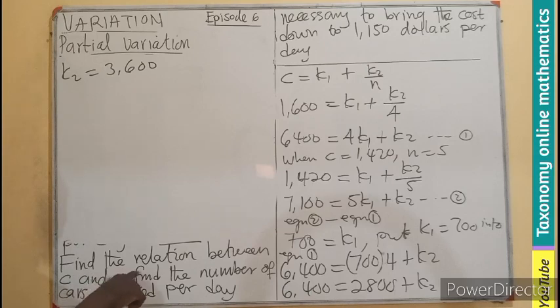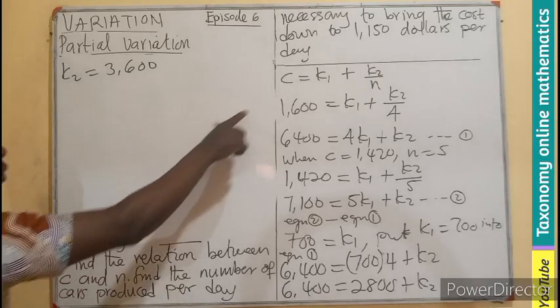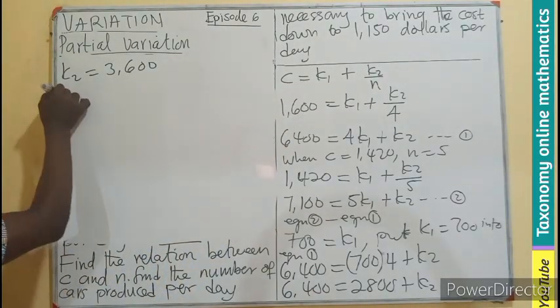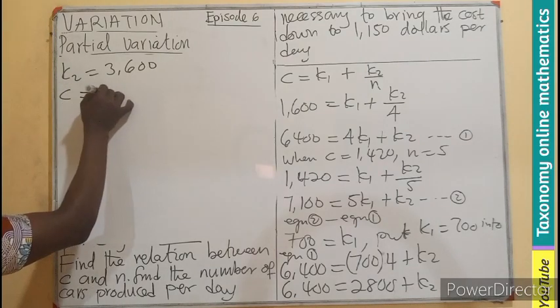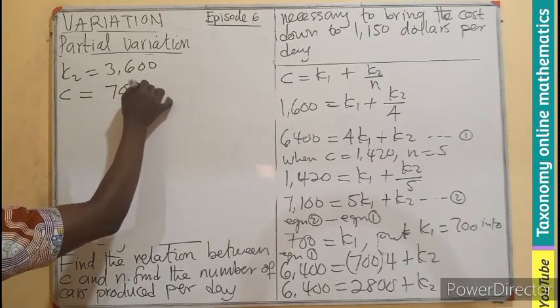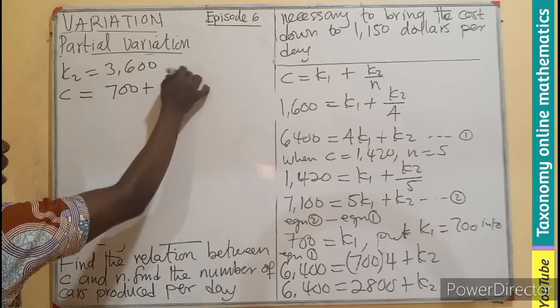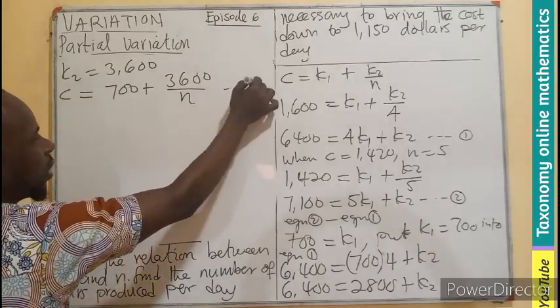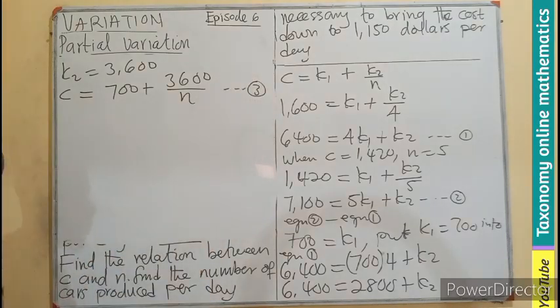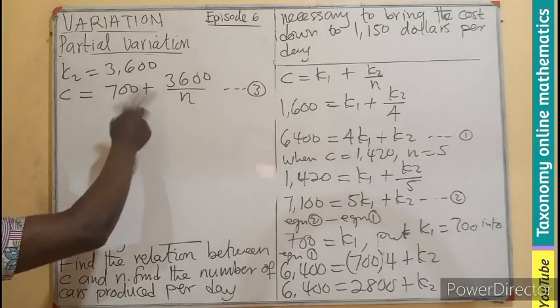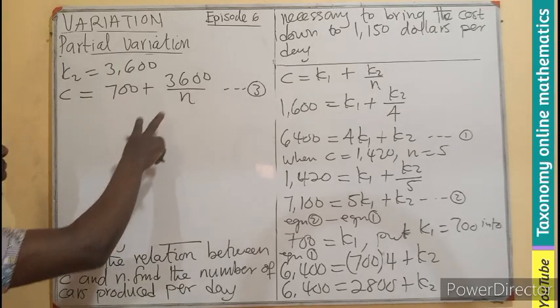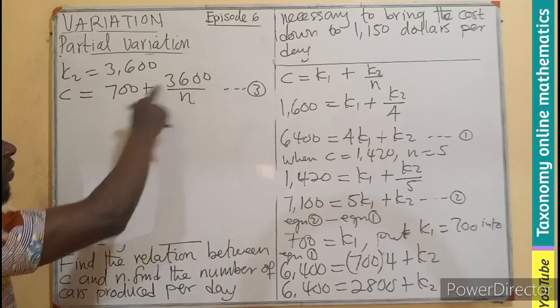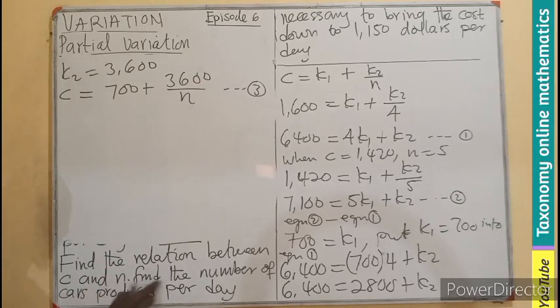The relation we are looking for by substitution will mean that C equals K1, which is 700, plus K2, which will be 3,600, divided by N. This is what we are looking for as the relation between C and N.